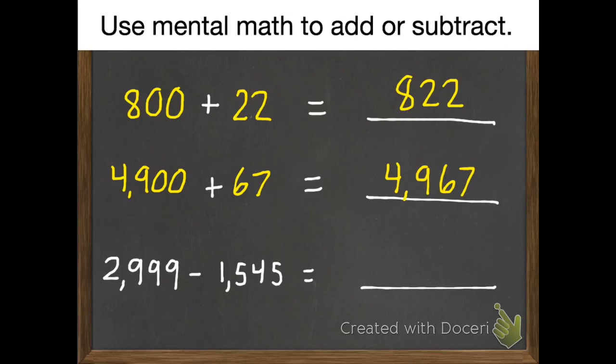And this last one, I would just do it in my head, because all the numbers, the digits in the first, are greater than those in the second. So I can just do 9 subtract 5 is 4, 9 subtract 4 is 5, 9 subtract 5 is 4, 2 subtract 1 is 1.